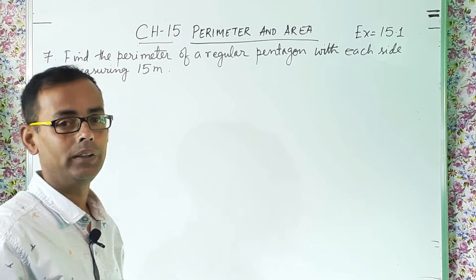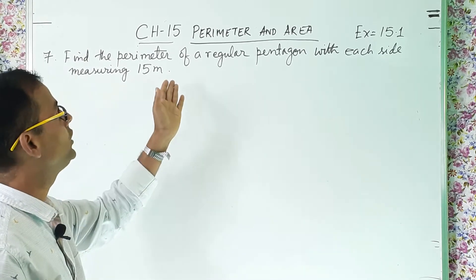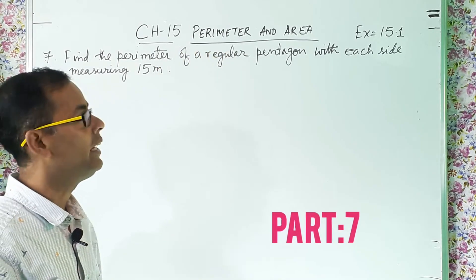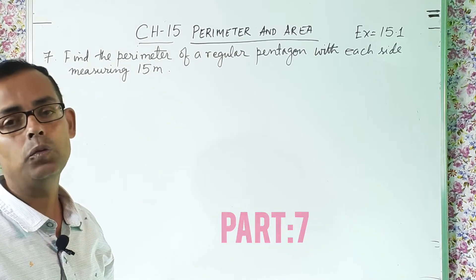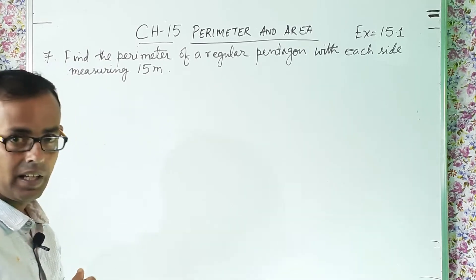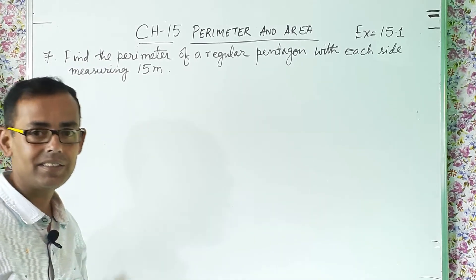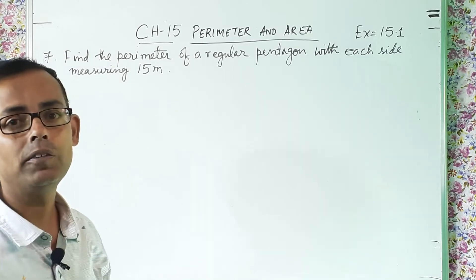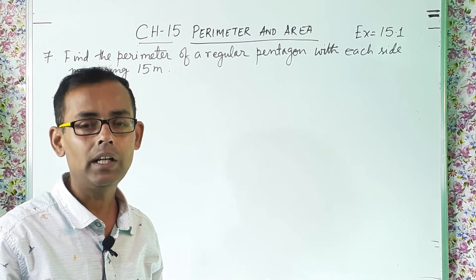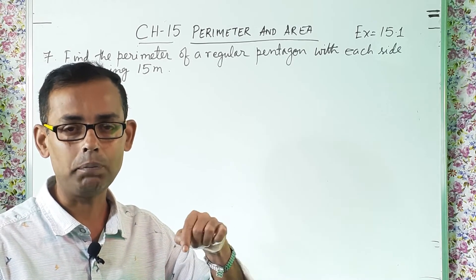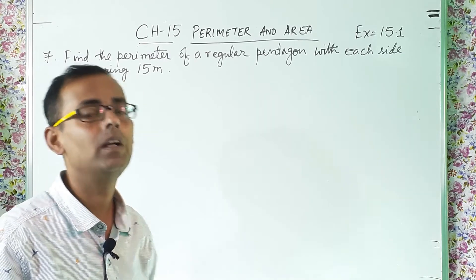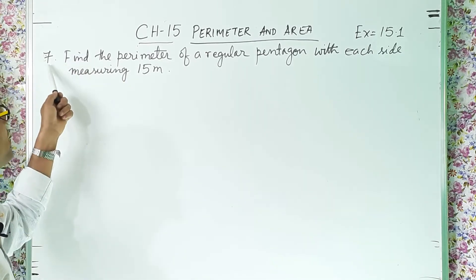Now class 6 students, we were solving the chapter 15 Perimeter and Area, Exercise 15.1 and we have solved till question number 6 and today we are going to solve question number 7. Those who have not watched the previous parts, you can watch it. I have shared the link in the description below as well as in the I button.